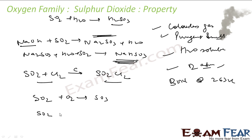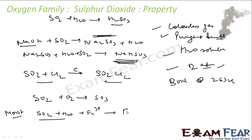Moist SO2 — that is SO2 with some water — acts as a reducing agent. For example, it reacts with ferric ions (Fe3+), reducing them to ferrous ions (Fe2+), and the reaction also produces SO4 2− and H+ ions.